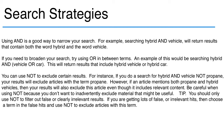You can use NOT to exclude certain results. For instance, if you do a search for hybrid AND vehicle NOT propane, your results will exclude articles with the term propane. However, if an article mentions both propane and hybrid vehicles, then your results will also exclude this article, even though it includes relevant content. Be careful when using NOT, because you don't want to inadvertently exclude material that might be useful.